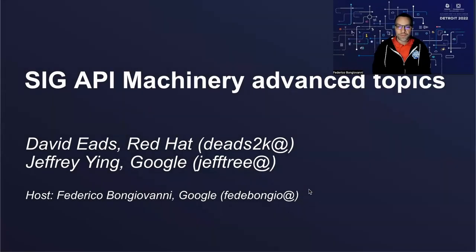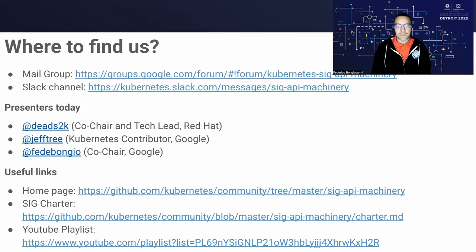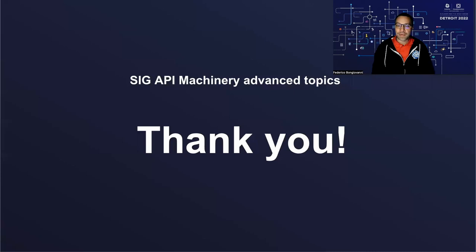Hello again. I hope you enjoyed these two talks as much as I did. I'm always impressed by the level of depth and quality of the presentations my colleagues prepared. Thank you so much, David and Jeffrey, for walking us through aggregated API servers and OpenAPI v3. To close, I'll remind you that SIGAPI Machinery is part of open source Kubernetes. We have open meetings twice a month, office hours twice a week for pull requests and issues, and two subworking groups. You can join at any time and contribute. Find us through email, Slack, our homepage, or GitHub directly. Thank you again for coming — have a great KubeCon.